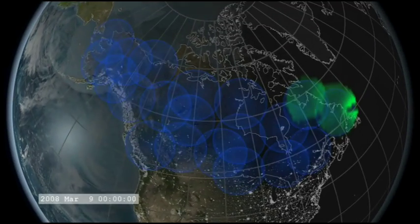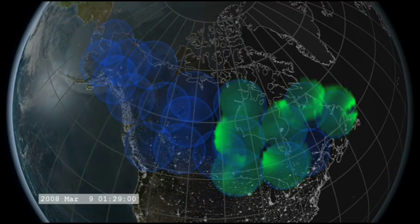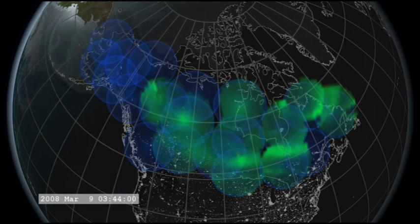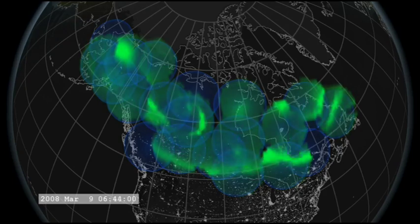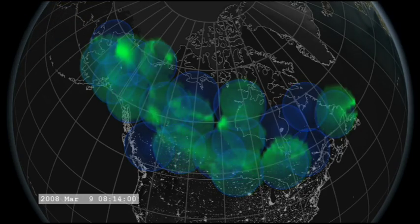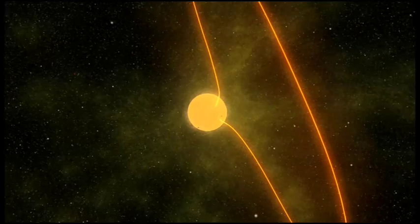One such substorm in March 2008 produced lightning-fast aurora with the energy of a moderate earthquake. NASA scientists found the answer to this mysterious behavior and mass of energy in giant magnetic ropes.